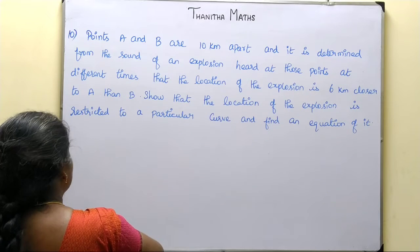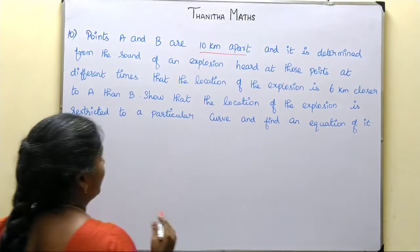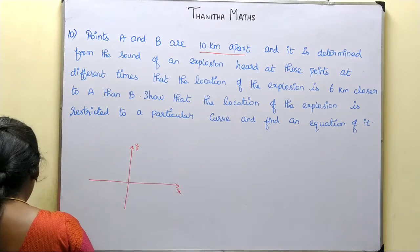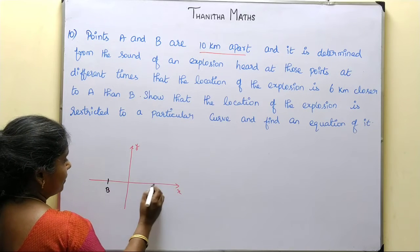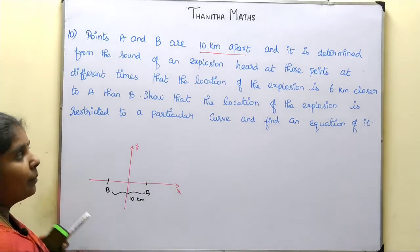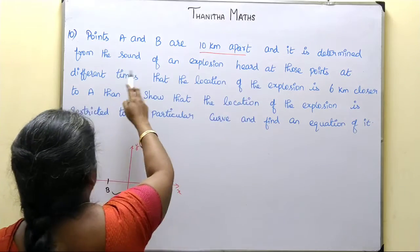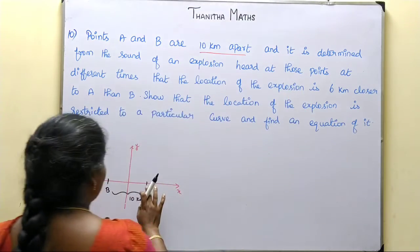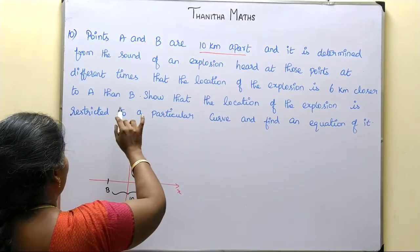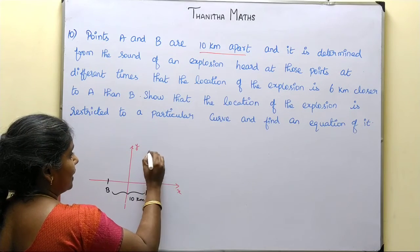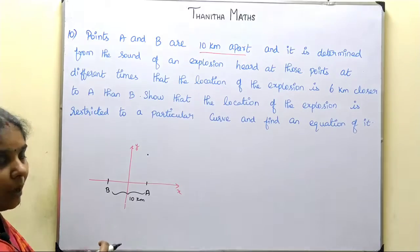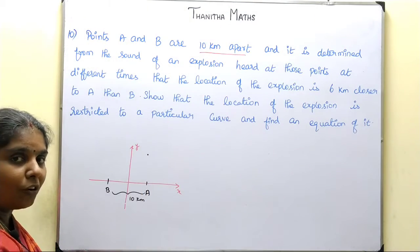So, what do we say? The endpoints A and B are 10 km apart. It is determined from the sound of an explosion heard at these points at different times that the location of the explosion is 6 km closer to A than B. So where does the explosion come from? The sound reaches B and A at different times, and the explosion point is 6 km nearer to A.